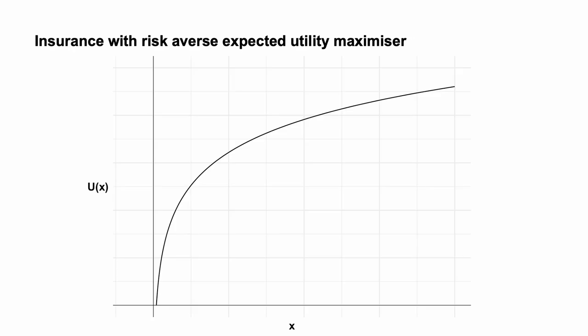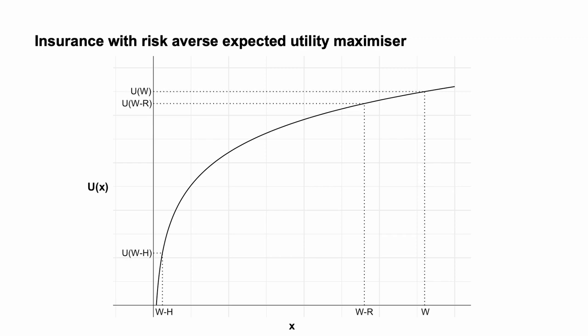The following diagrams illustrate. First, I plot the agent's utility function. The utility function is concave as the agent is risk-averse; each additional unit of wealth provides less utility than the previous unit. I then mark each possible outcome from purchasing or not purchasing insurance on the horizontal axis, and the utility of each of those outcomes on the vertical axis. These are wealth after losing the house when uninsured, W minus H; wealth after paying the insurance premium, W minus R; and wealth if uninsured but the house does not burn down, W. I have not drawn this to scale.